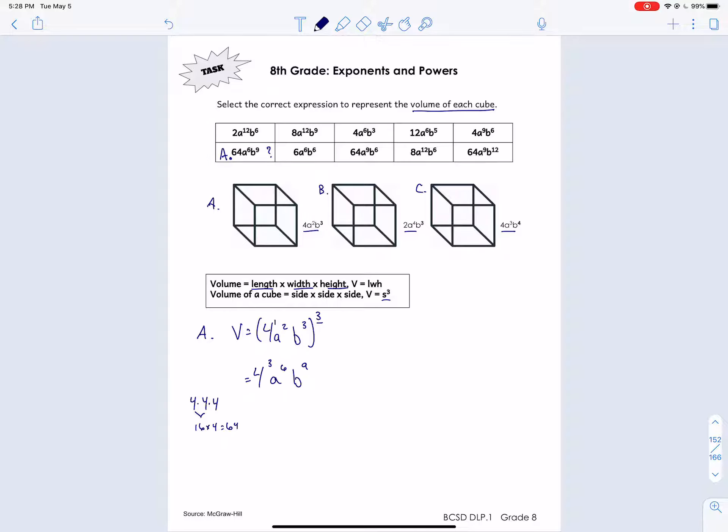Okay, let's do the same thing with B. Volume equals 2A to the 4th B to the 3rd, all that to the 3rd power. And then we simplify. So here's an exponent. So 2 to the 3rd power, A, and then 4 times 3 is 12. And then B, 3 times 3 is 9.